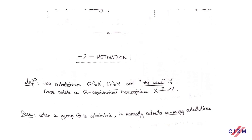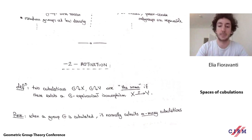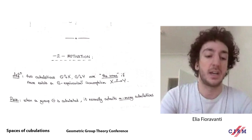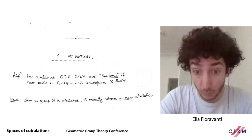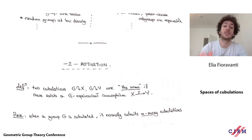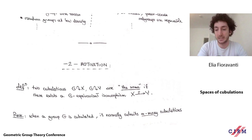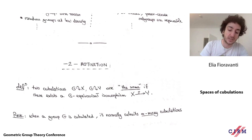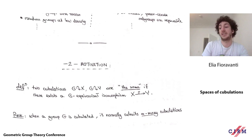This is best exemplified by how you normally cubulate hyperbolic groups. There's a very good procedure from the work of Sageev, Bergeron, and Wise. You have your hyperbolic group G, and your goal is showing that for any pair of points in the Gromov boundary, you can find a quasi-convex subgroup whose limit set separates these two points at infinity. A result of Bergeron and Wise tells you that if you can separate any two boundary points this way — even using infinitely many conjugacy classes — finitely many suffice.